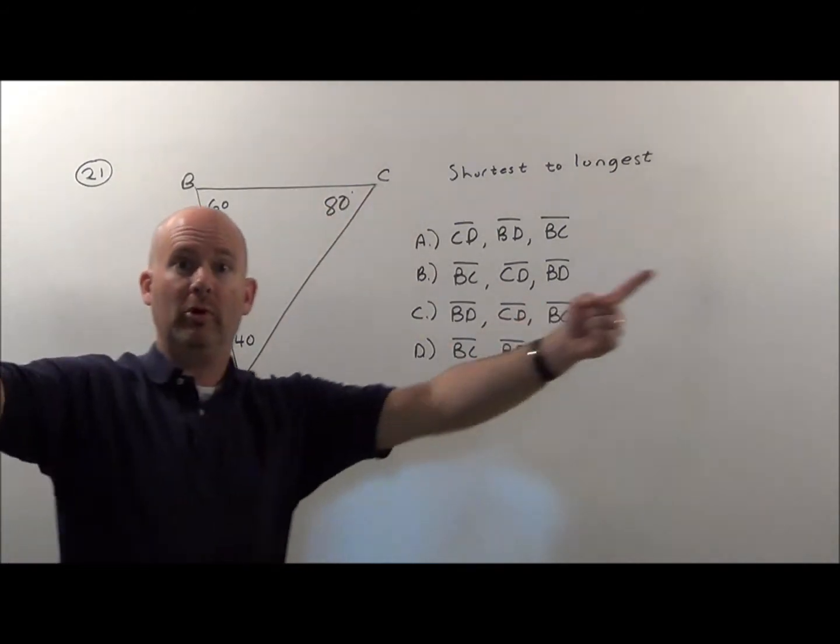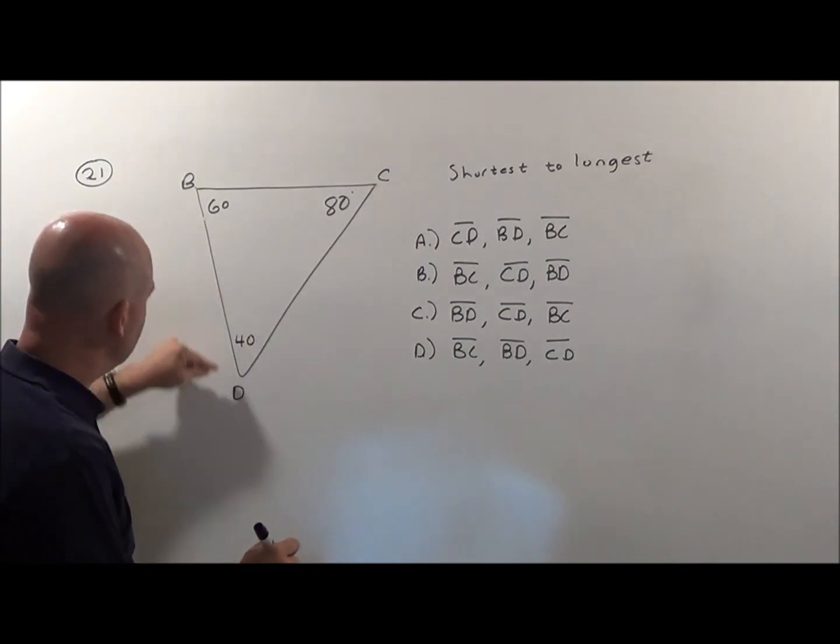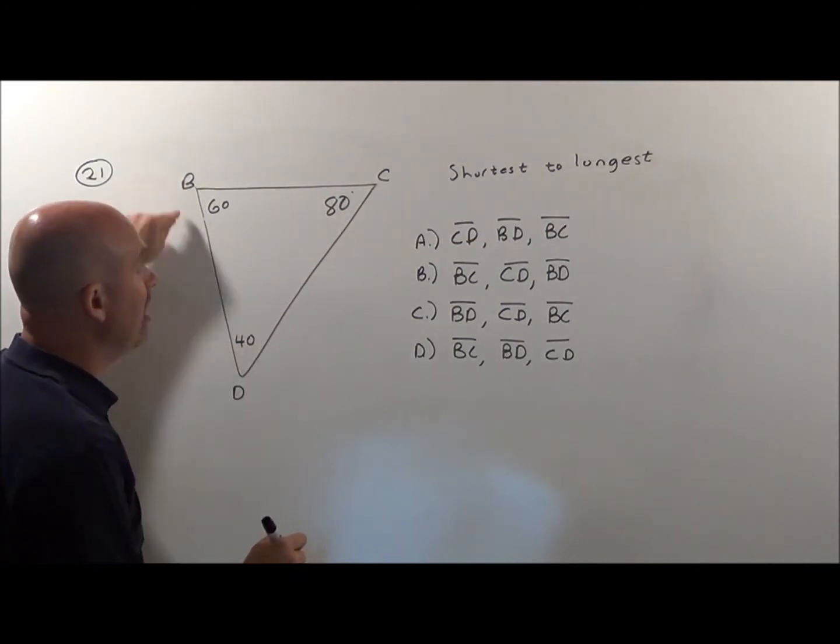This is the biggest angle, that's open really wide, therefore the side across from it must be the longest side. BD is the longest.